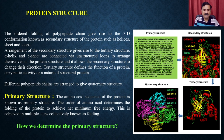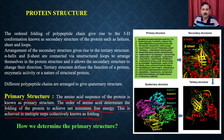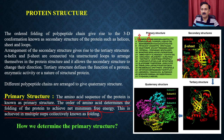The amino acid sequence of a protein is known as the primary structure. The order of the amino acids determines the folding of the protein to achieve the net minimum free energy, and this is achieved in multiple steps collectively known as folding. Single letter codes of the different amino acids are shown because it is almost impossible to write the full name of each amino acid. These primary structures fold to give the secondary structures — that event is called folding.